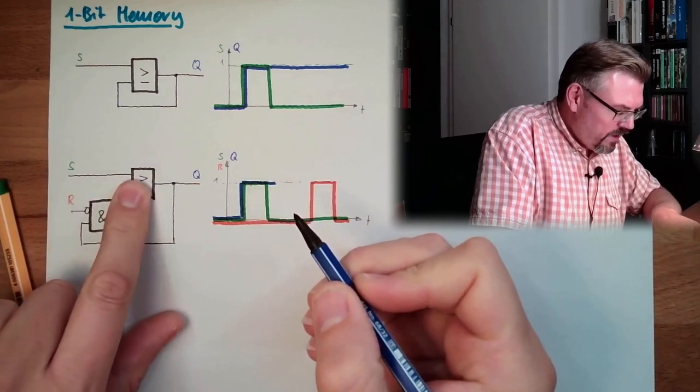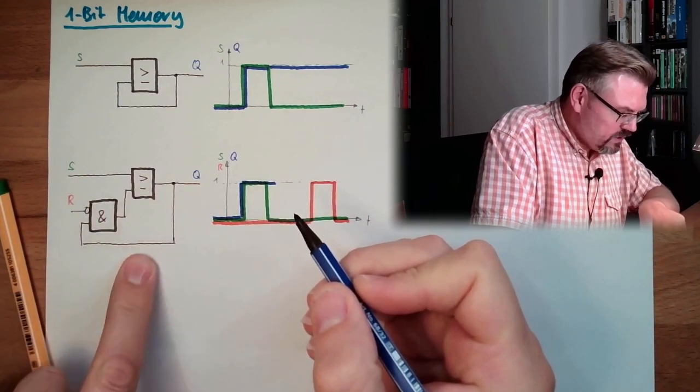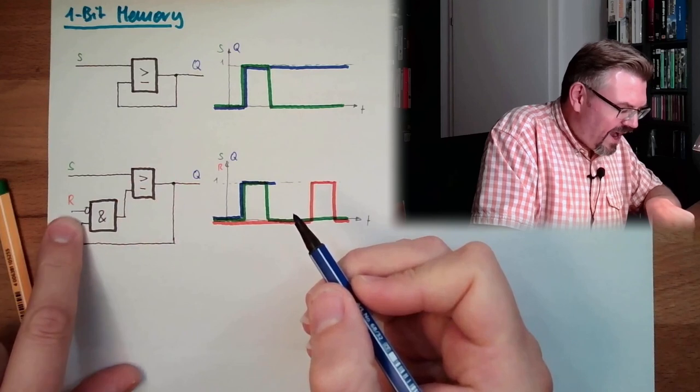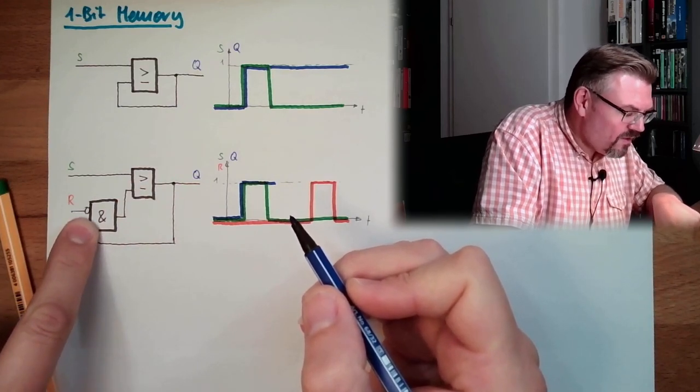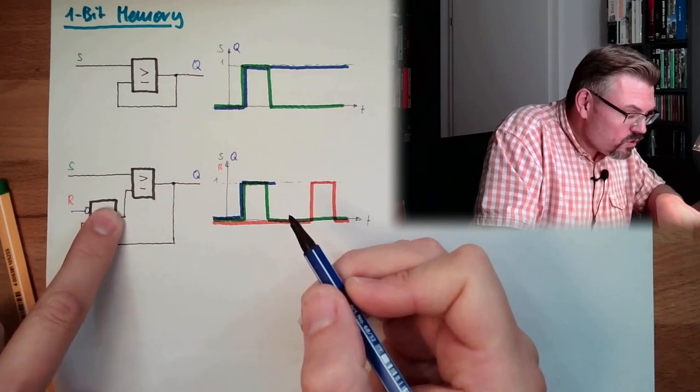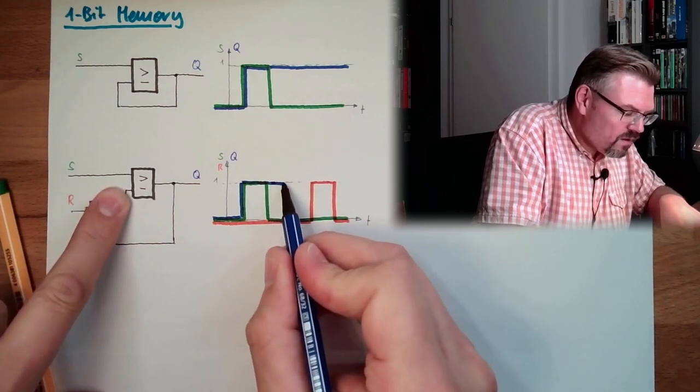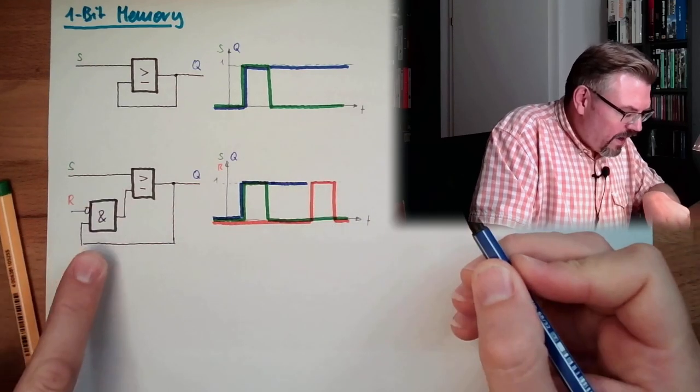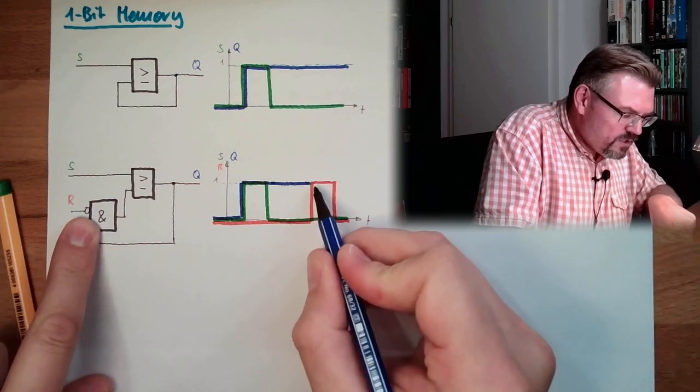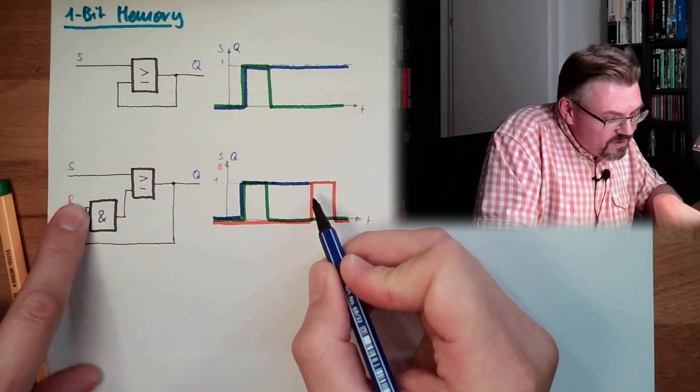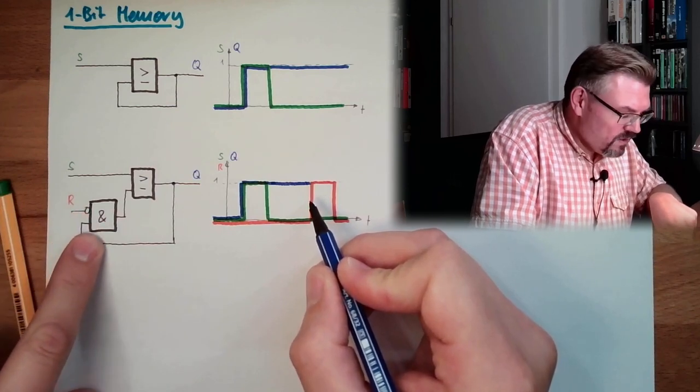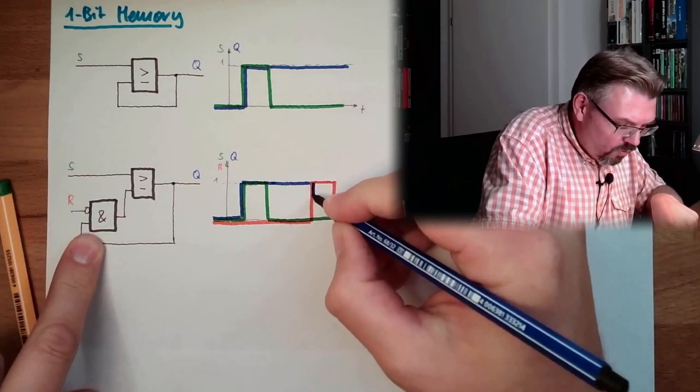Then S is going away. S is zero, Q is one. So we have here one, R is zero. So after the NOT it will be one, so we will pass here, we will stay on. And here, after we have reached the one level here, after the NOT it will be zero. The AND is blocked, so we will drop here.